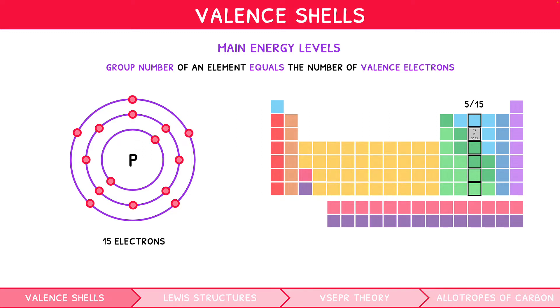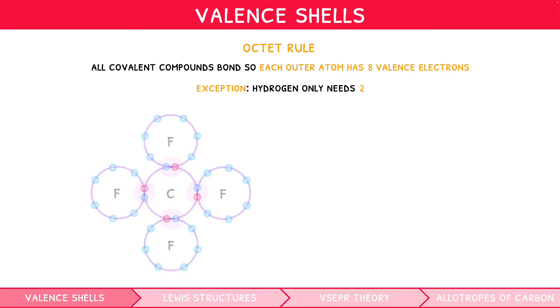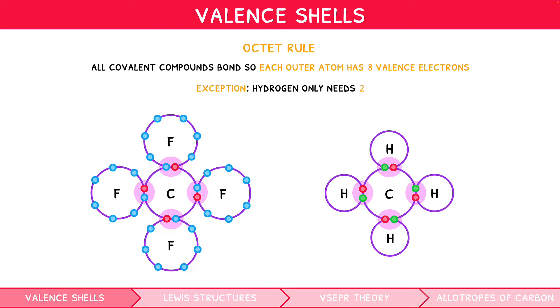When discussing valence shells, an important rule arises, the octet rule. This is that all covalent compounds bond so that each outer atom has 8 valence electrons. The only exception to this is hydrogen, which only needs 2. For example, the valence electron distribution within CF4 looks like this, and CH4 looks like this.